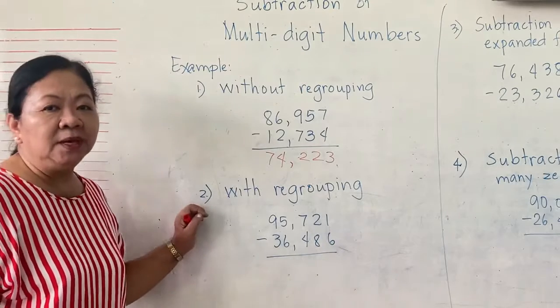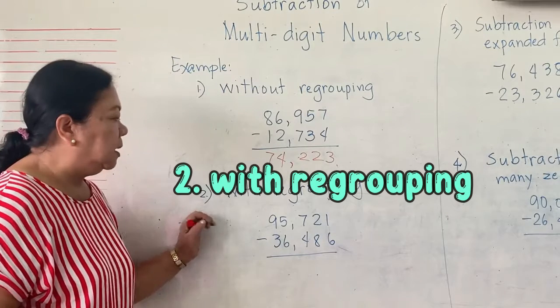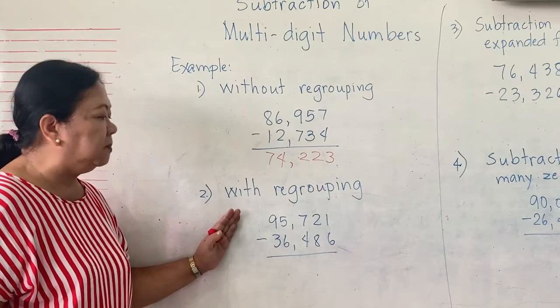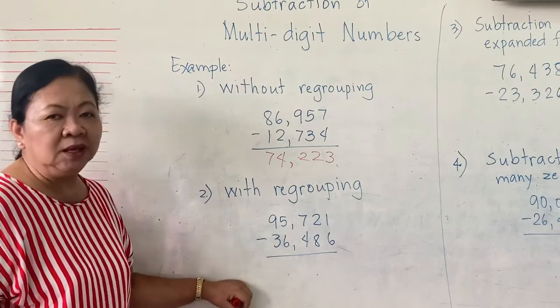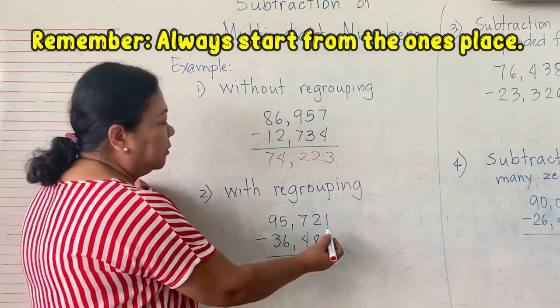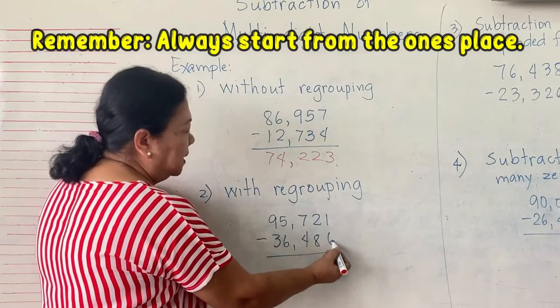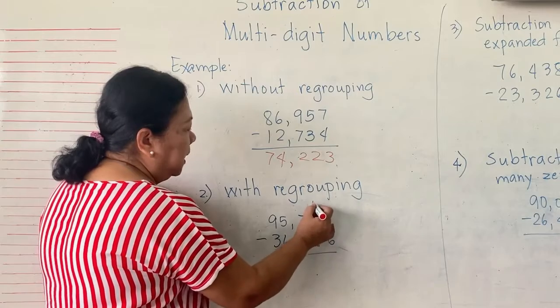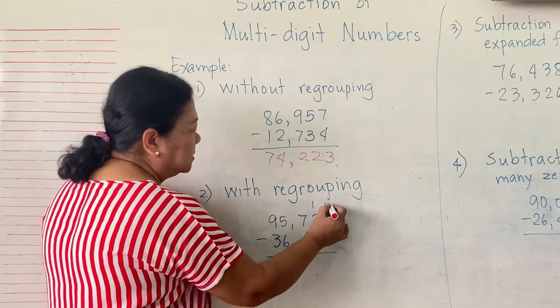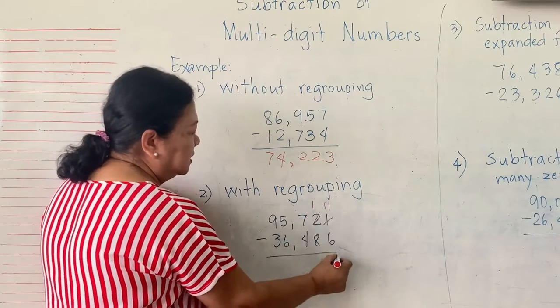Now, number 2 example is with regrouping. So here we have 95,721 minus 36,486. Start again from the one's place. 1 minus 6 cannot. It will borrow 1 from 2. 2 will become 1 and this one becomes 11. 11 minus 6 is 5.